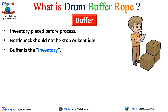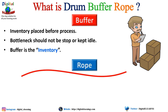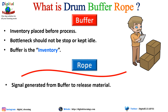The Rope is a signal generated from the buffer to release material. It is a method to limit upstream production — it tells us when to slow down, stop, or produce more parts. It refers to the system that controls the flow through the entire process to ensure all tasks are completed in the right sequence and at the right time.